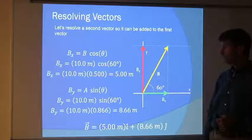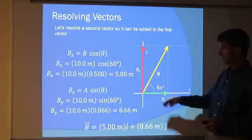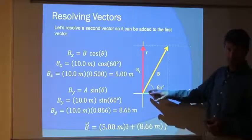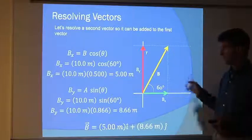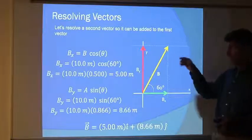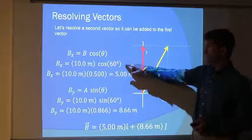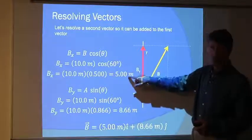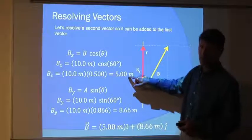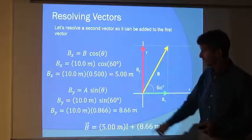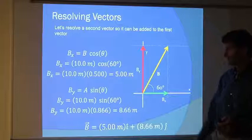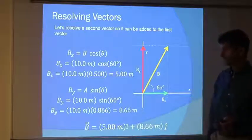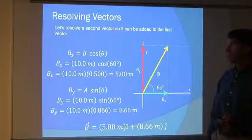What if, this is just another example of another vector. Here I have another 10 meter long vector. I'm going to take this vector and add it to the previous A, but we'll resolve this one too. Cosine of 60 degrees is 1 half. So 10 times 1 half is 5 meters. Sine of 60 degrees is 0.866. So 8.66 meters.